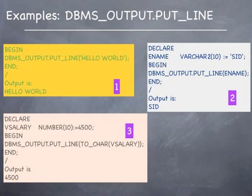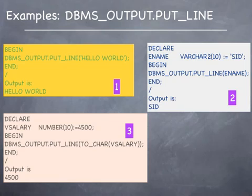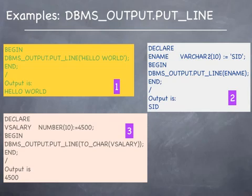In the third example, a variable called vsalary is being declared. It is initialized with a value of 4500 during declaration. In the body of the program, the DBMS_OUTPUT.PUT_LINE statement is displaying the value of the variable vsalary. Notice the use of the TO_CHAR function to convert the numeric value to a string. Although this is not mandatory in this example, it is a good programming practice to use the TO_CHAR function when displaying variables which are of a non-character type.